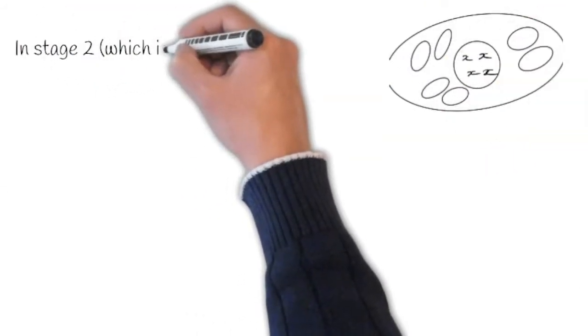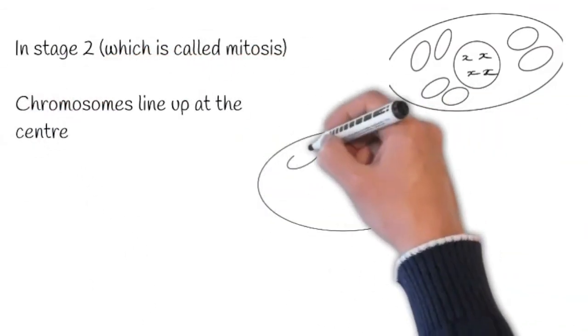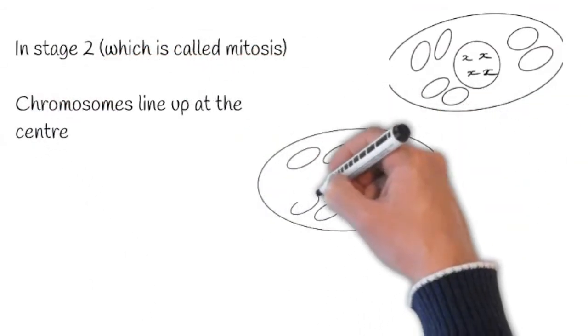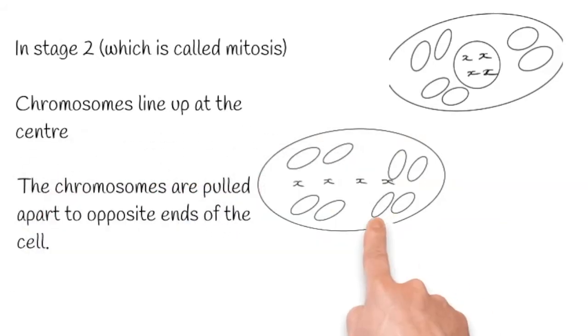In stage two, which is called mitosis, the chromosomes line up at the centre. The chromosomes are then pulled apart to opposite ends of the cell.